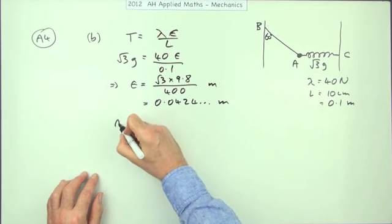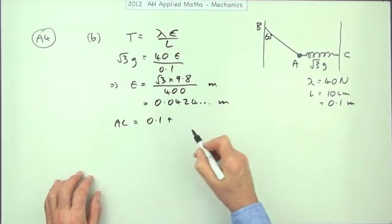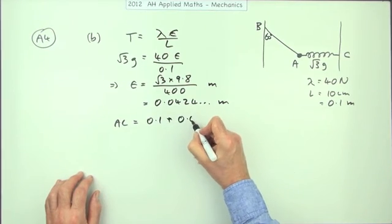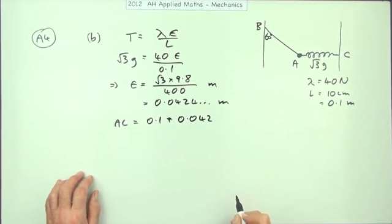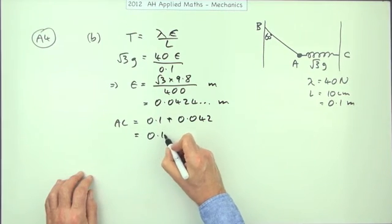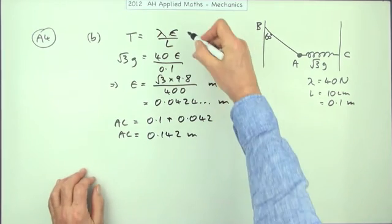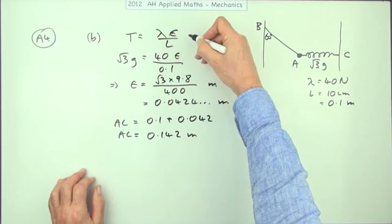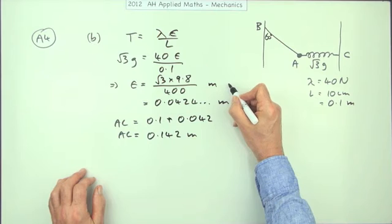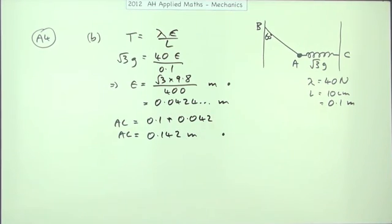which means the length AC would be the original length, which is 0.1, plus however much I want to put down of that, 0.0424, because that'll give me 3 in the answer, which means the length AC is 0.142 metres. Now the first mark was for this formula, rearranged to find the extension, and the second one was just for getting the final answer and adding it on.